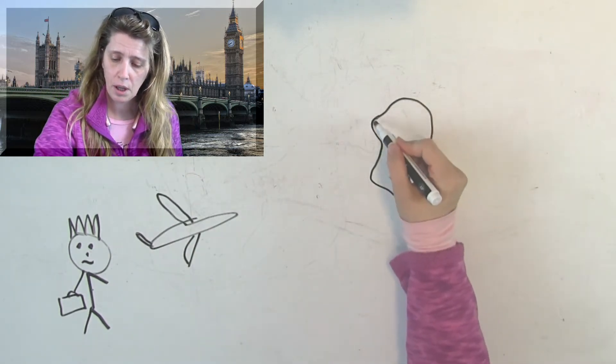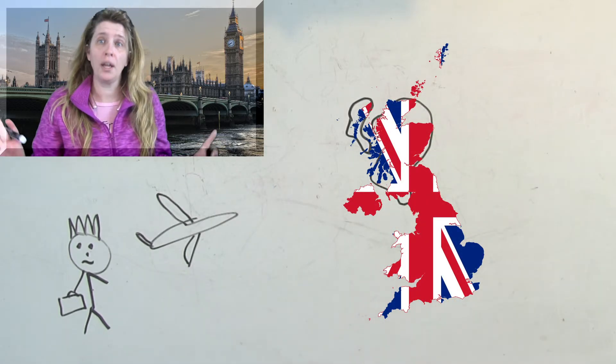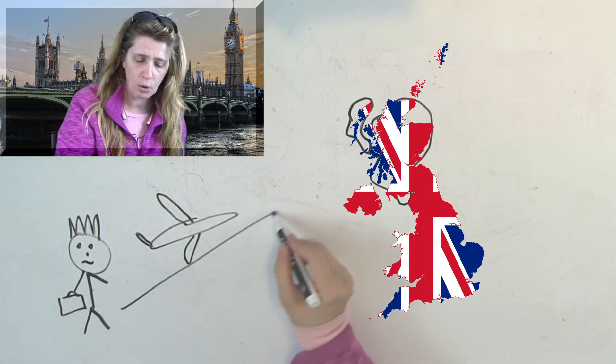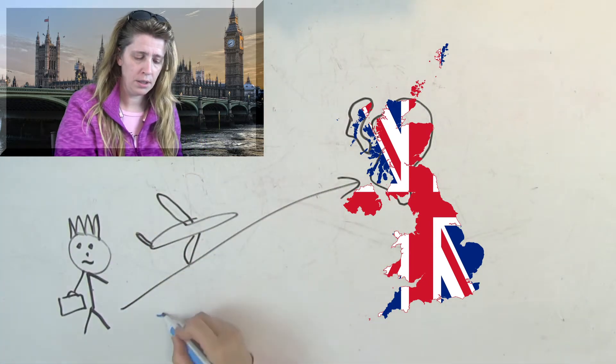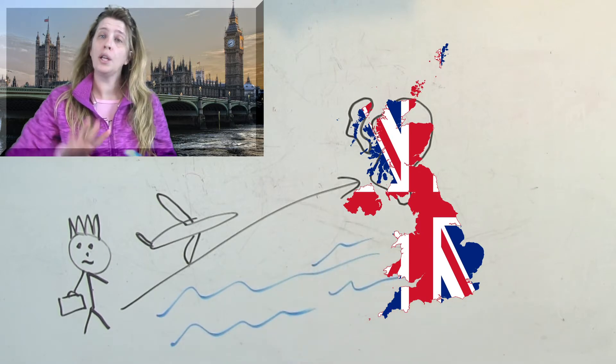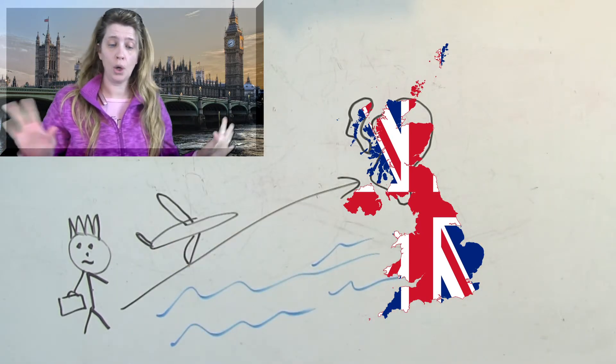This is going to be my really not so good picture of the English Isles. So he flies over the ocean and he goes to England. And he takes a suitcase and he goes to a hotel.